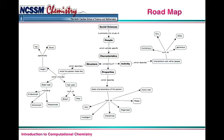And what we're showing here is this is a roadmap of the social sciences. So what you see here is social sciences is primarily the study of people who exhibit specific characteristics. And those characteristics are structure, property and activity.